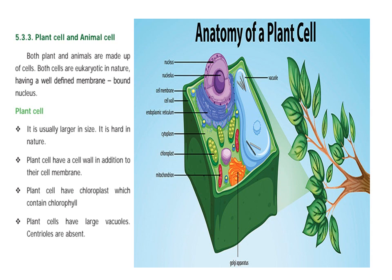Plants have a cell wall, and they have chloroplasts which contain chlorophyll. Plant cells have a green color. Large vacuoles are present, and centrioles are absent in plant cells.